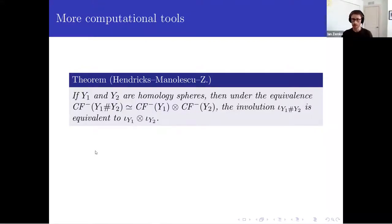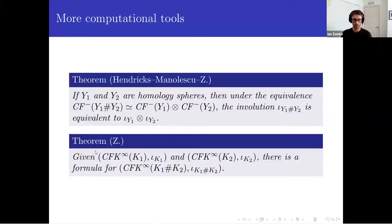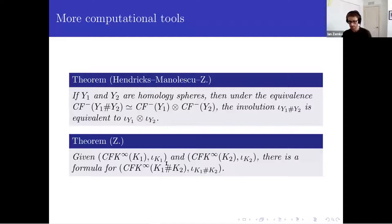There's also a Künneth formula for taking tensor products: the involution on the tensor product turns out to be just the tensor product of the involutions. That was proven by Hendricks, Manolescu, and myself. There's a version of this for knot Floer homology that Jen Hom mentioned in her talk: if you know the involutions on K_1 and K_2, there's a formula for the involution on the connected sum. It's no longer just the tensor product of the involutions, but it's almost that — it's that plus a correction term. That allows computations and is helpful if you want to compute connected sums of things.